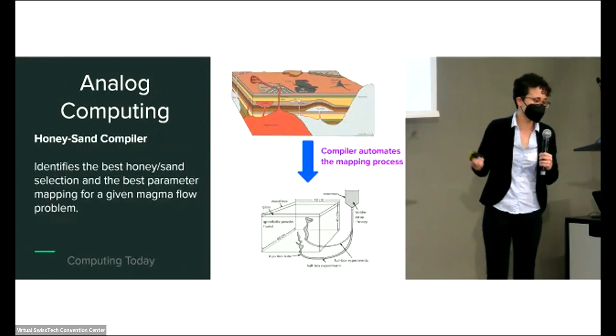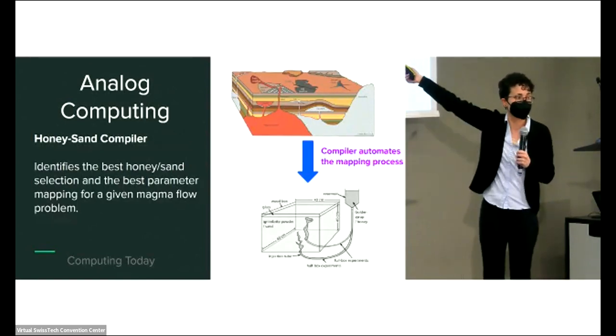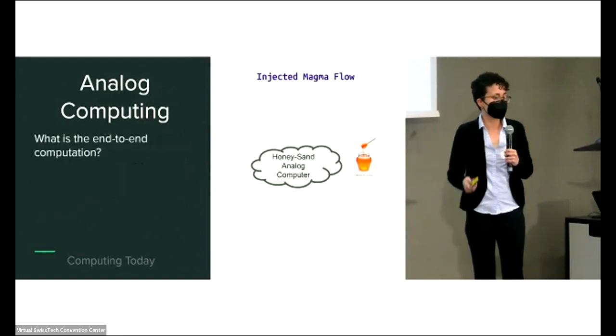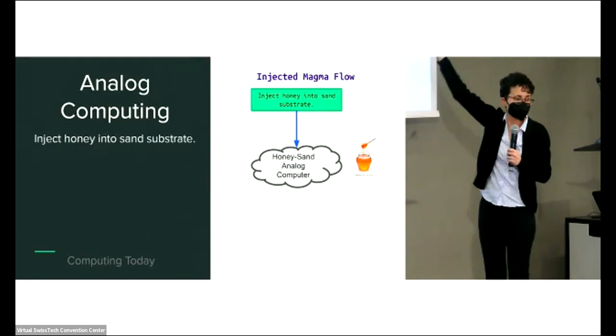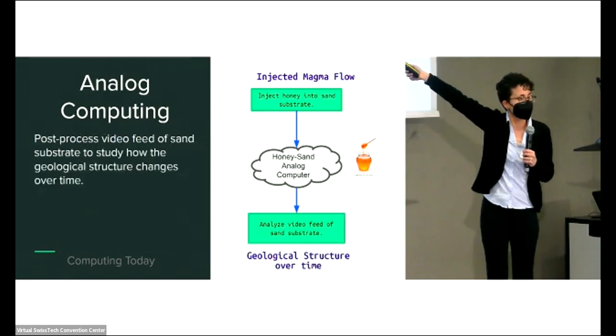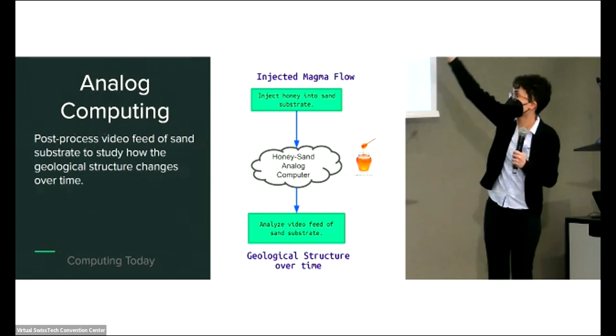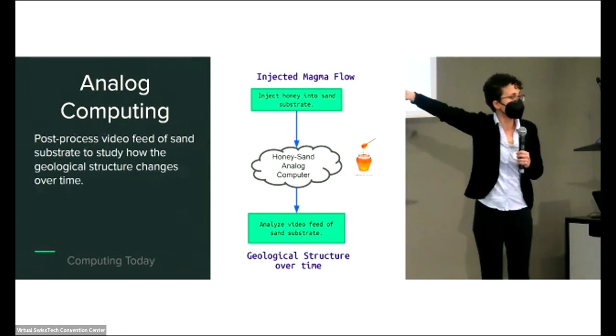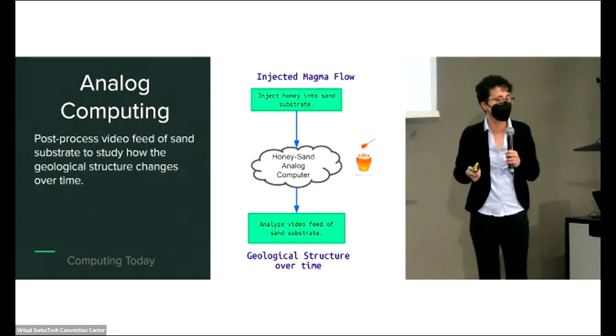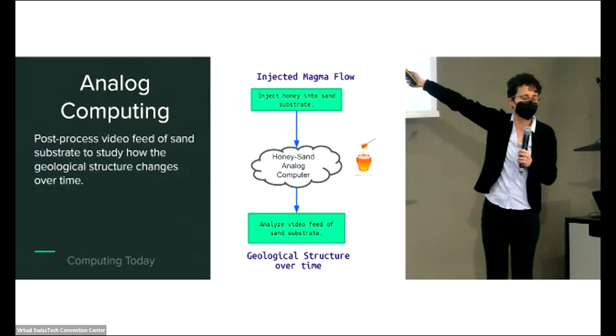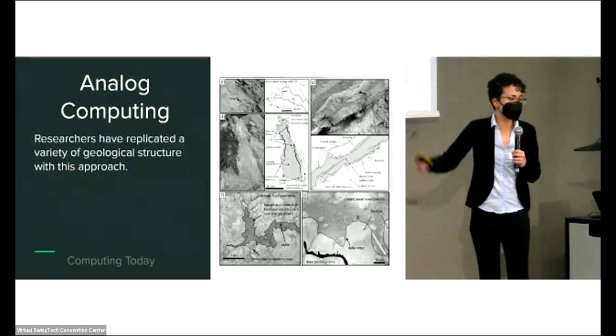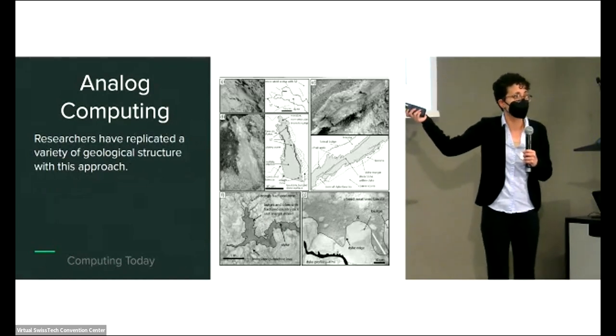What is the compiler for this? A compiler would identify the best honey sand selection and the best parameter mapping for a given magma flow problem. The end computation would be: given an injected magma flow, we identify when to translate that into an injection of honey into the substrate. Then we let the analog computer do its thing and record a video feed of the evolution of the physical state of the honey sand substrate and do image analysis to figure out what is happening geologically.